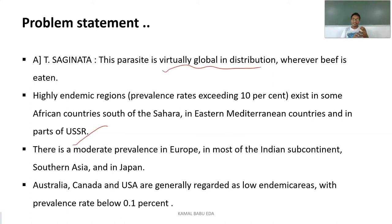Countries such as Australia, Canada, and the USA are generally regarded as low endemic areas, with a prevalence rate of less than 0.1 percent.